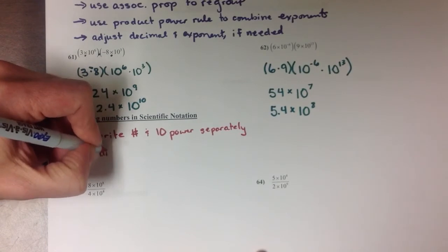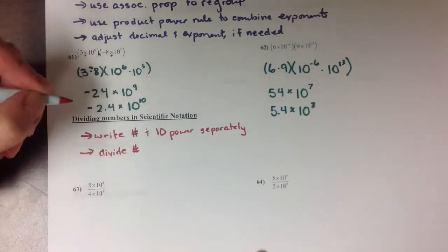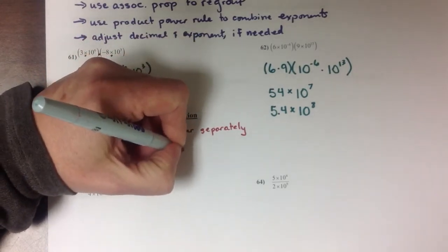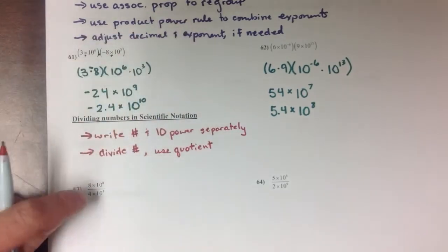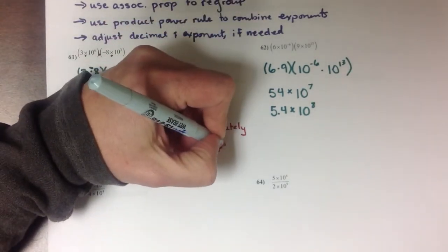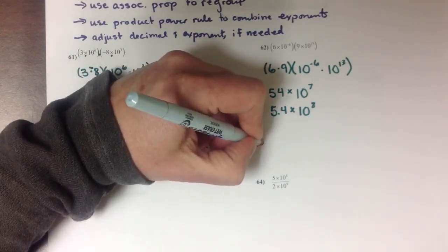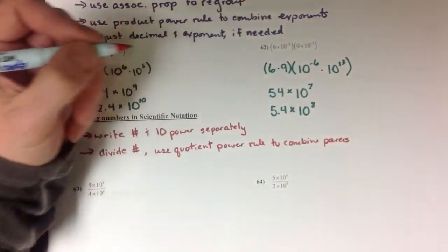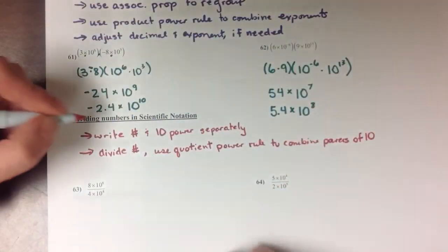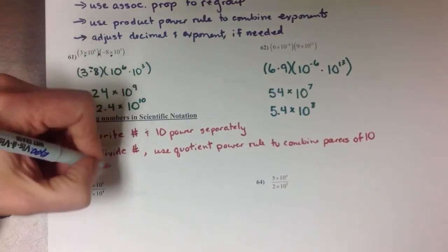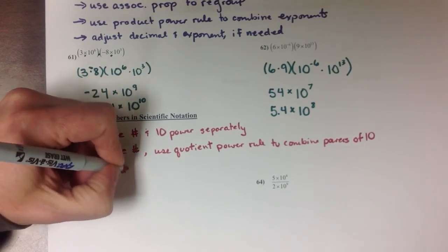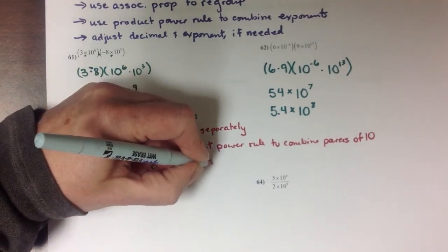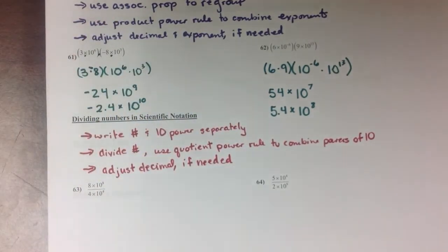Then divide numbers, so just reducing the fraction, and use the quotient power rule. That was the one that said when the base is the same, and in this case our base is always 10, we can just subtract the exponents to combine powers of 10. And then just like in the group above, if you need to, adjust the decimal.